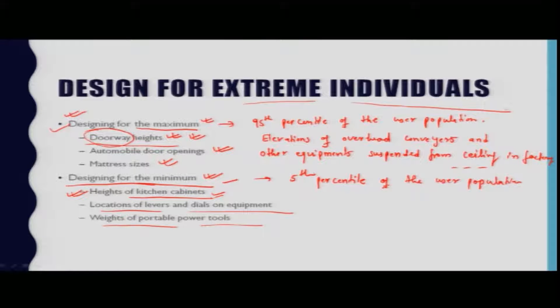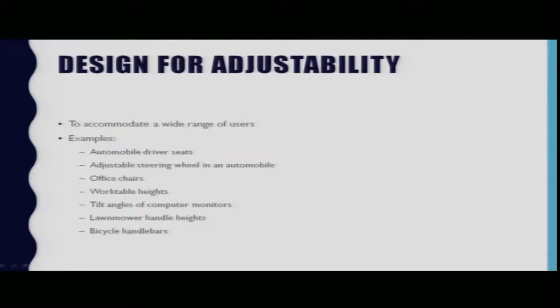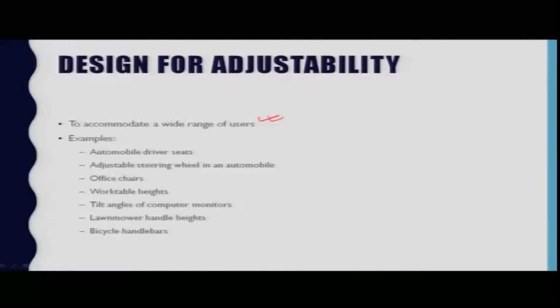In this way, designing for maximum dimension and designing for minimum dimension are the two categories for designing for extreme individuals. Another category is designing for adjustability. In many cases, products are designed so that certain features can be adjusted to give more flexibility for users.